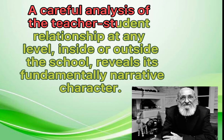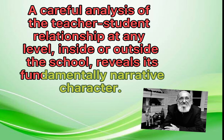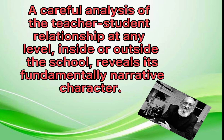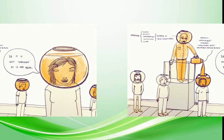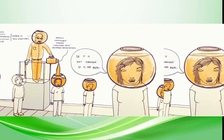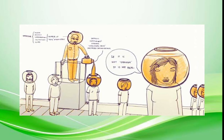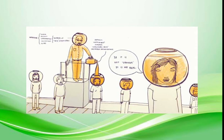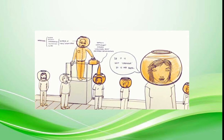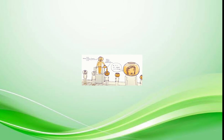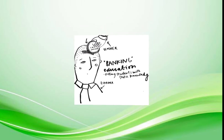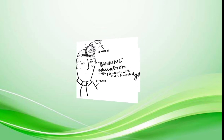Freire saw the moral potential in a transformative education — the potential to liberate. A careful analysis of the teacher-student relationship reveals its fundamentally narrative character: the relationship involves a narrating subject, which is the teacher, and patient-listening objects, which are the students. Narration with the teacher as narrator leads the students to memorize mechanically the narrated content. Worse still, it turns them into containers — receptacles to be filled by the teacher. The more completely he fills the receptacles, the better a teacher he is. The more meekly the receptacles permit themselves to be filled, the better students they are.